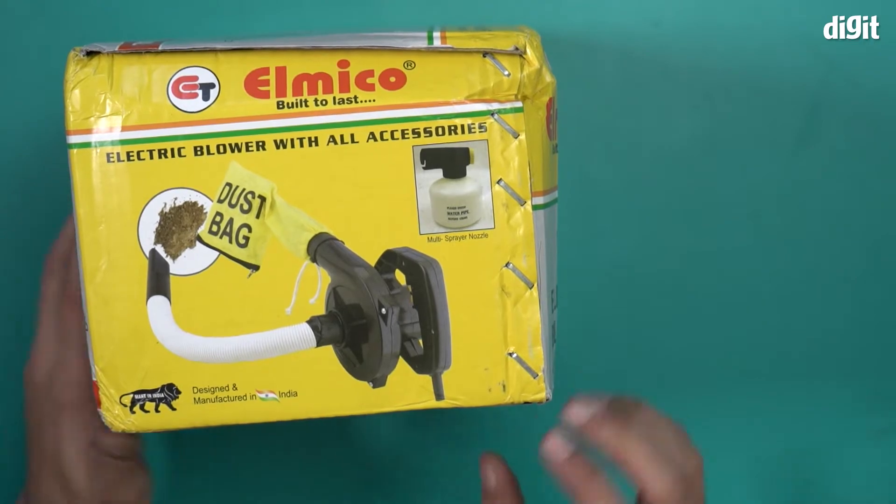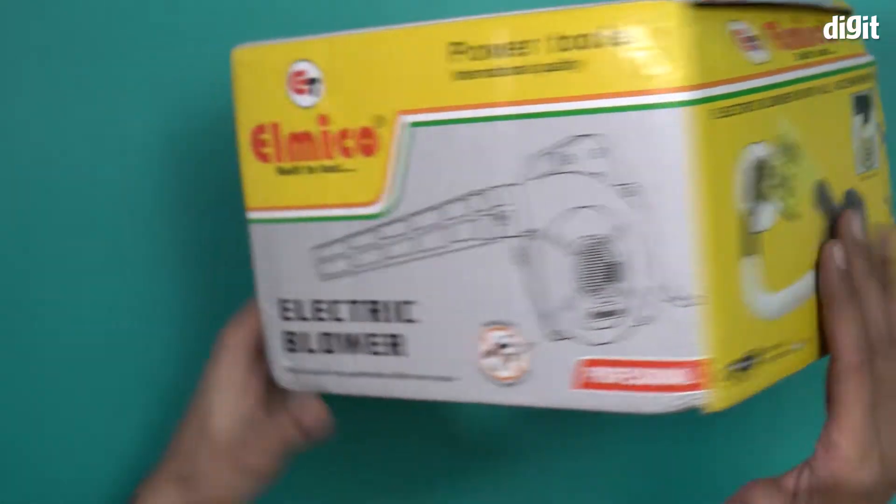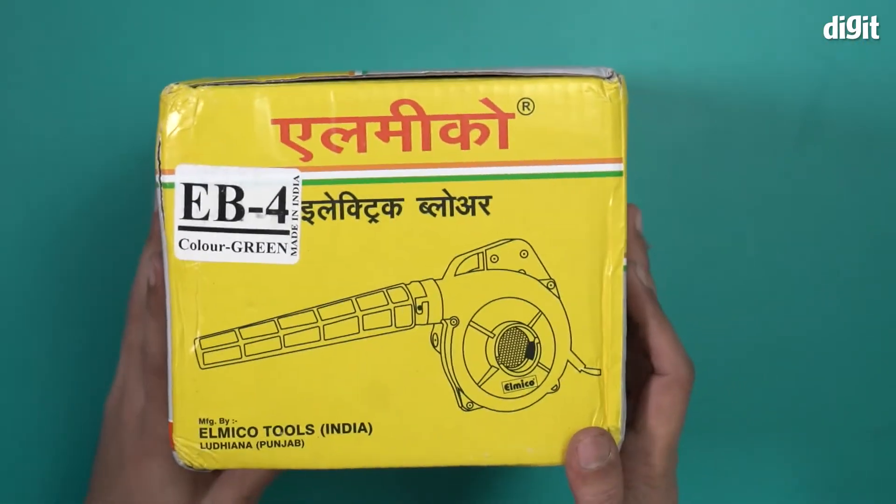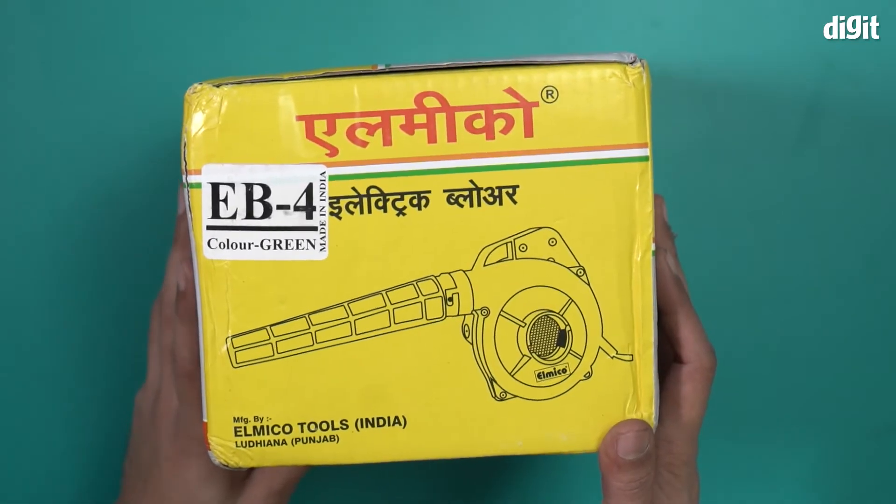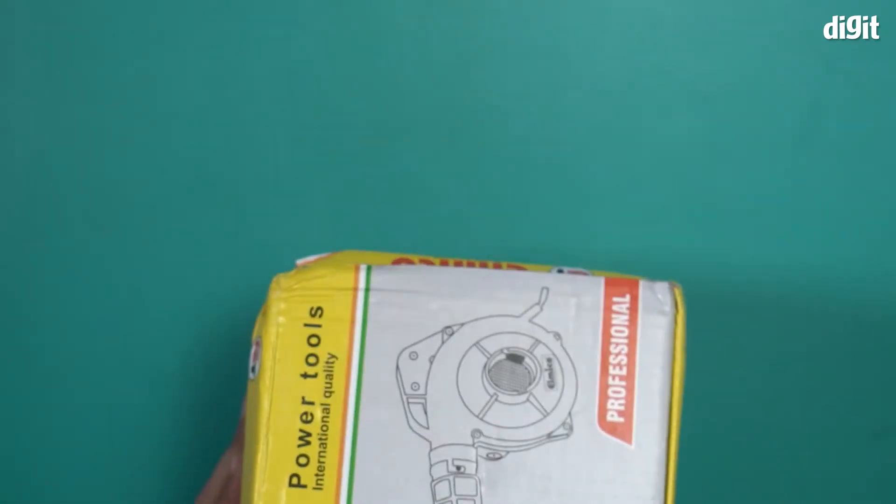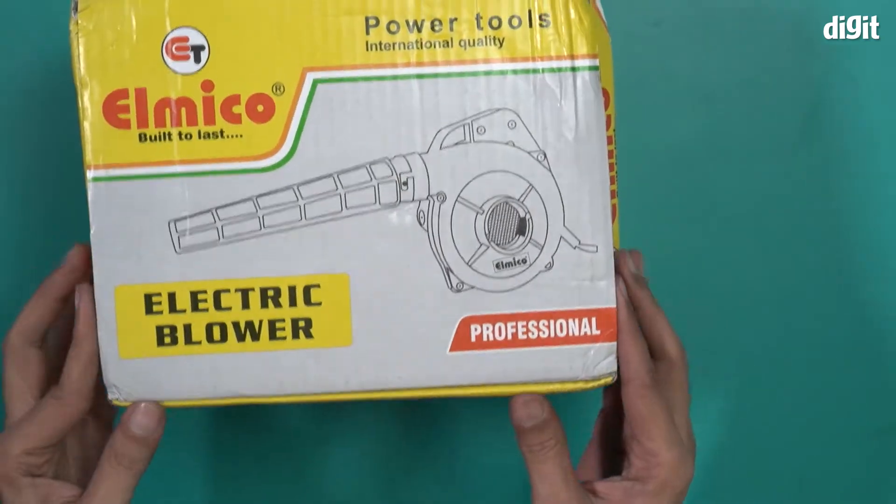This comes with a dust bag and a multi-sprayer nozzle. It's made in India. The model number is EB4 and the variant is green. Outside of this, we don't have any other information on the box.